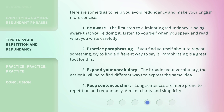Here are some tips to help you avoid redundancy and make your English more concise. 1. Be aware — the first step to eliminating redundancy is being aware that you're doing it. Listen to yourself when you speak and read what you write carefully. 2. Practice paraphrasing — if you find yourself about to repeat something, try to find a different way to say it. 3. Expand your vocabulary — the broader your vocabulary, the easier it will be to find different ways to express the same idea. 4. Keep sentences short — long sentences are more prone to repetition and redundancy. Aim for clarity and simplicity.